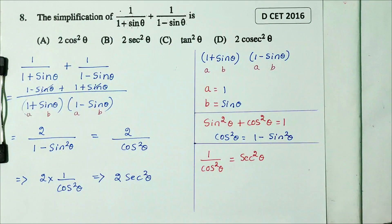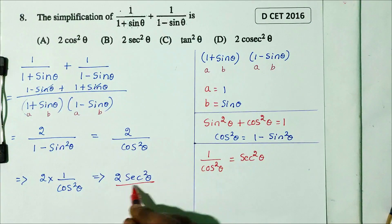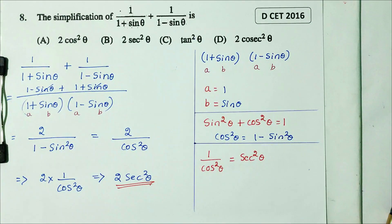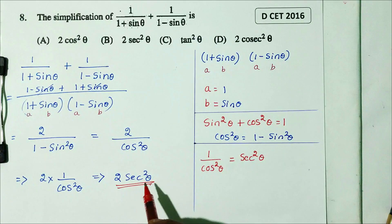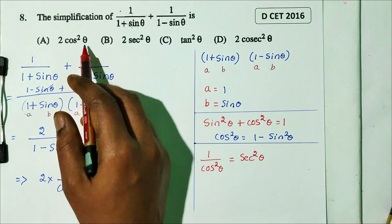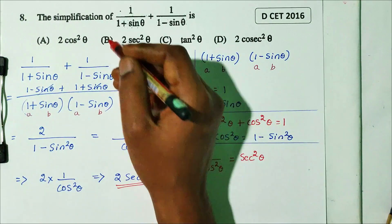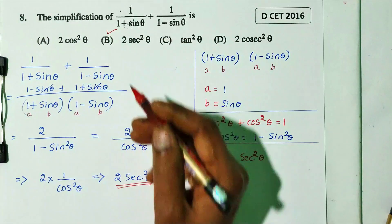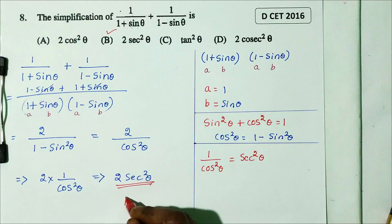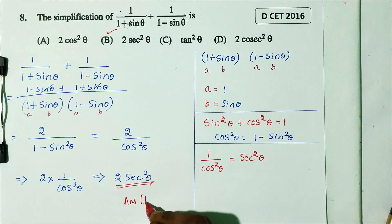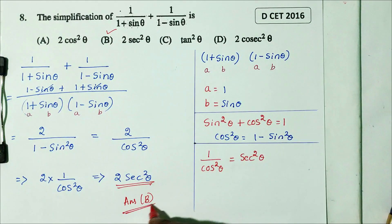So the expression simplifies to 2 divided by cos squared theta, which equals 2 sec squared theta. Option B is the right answer.